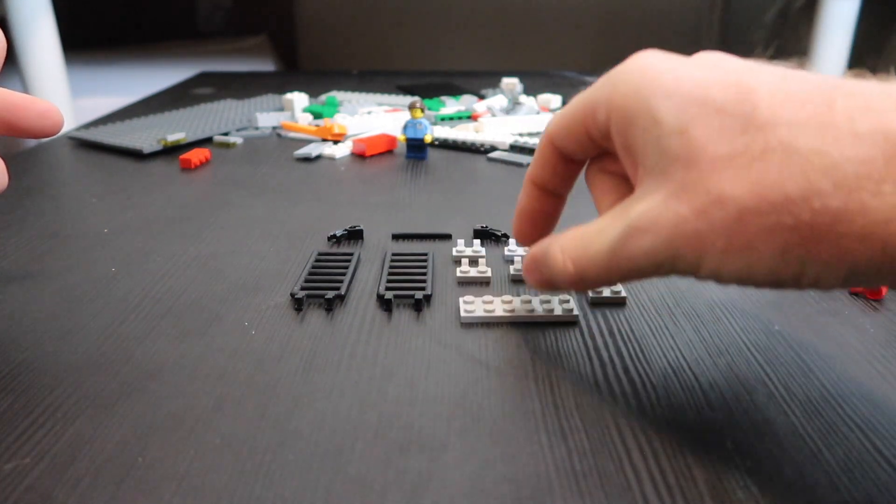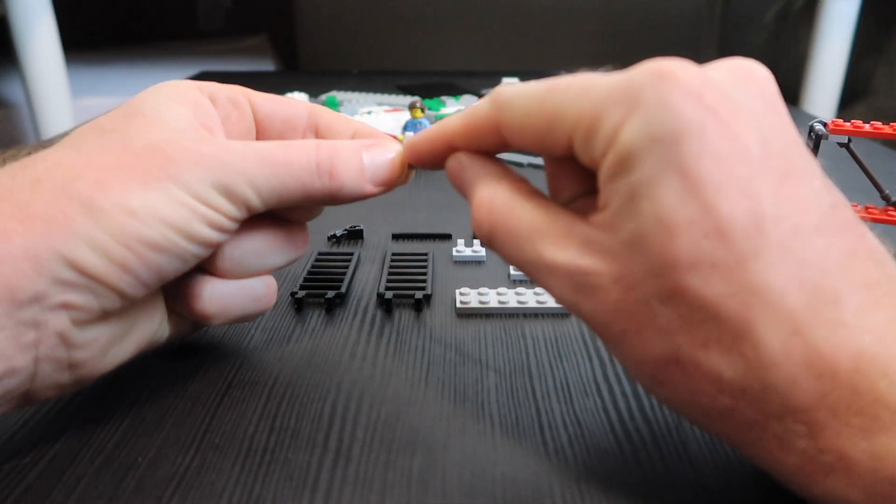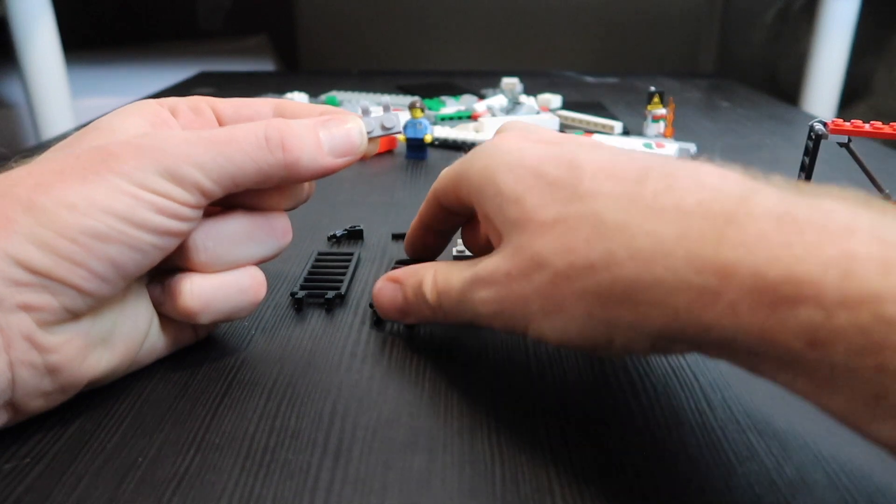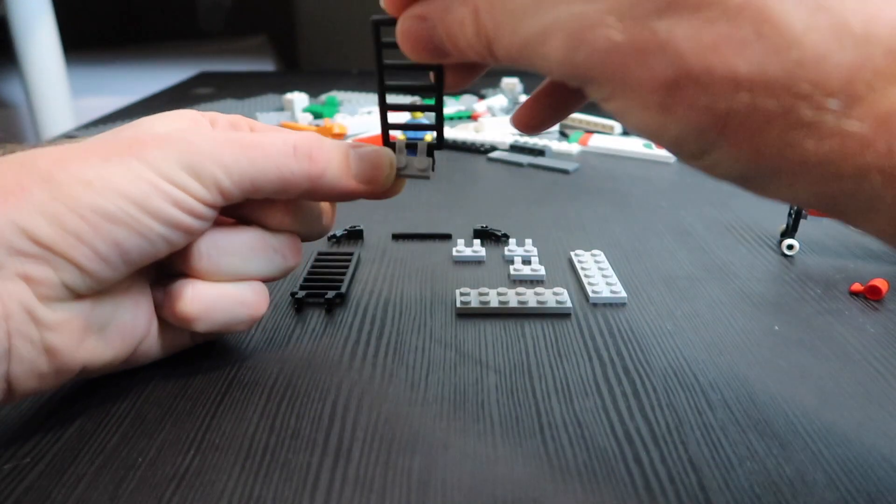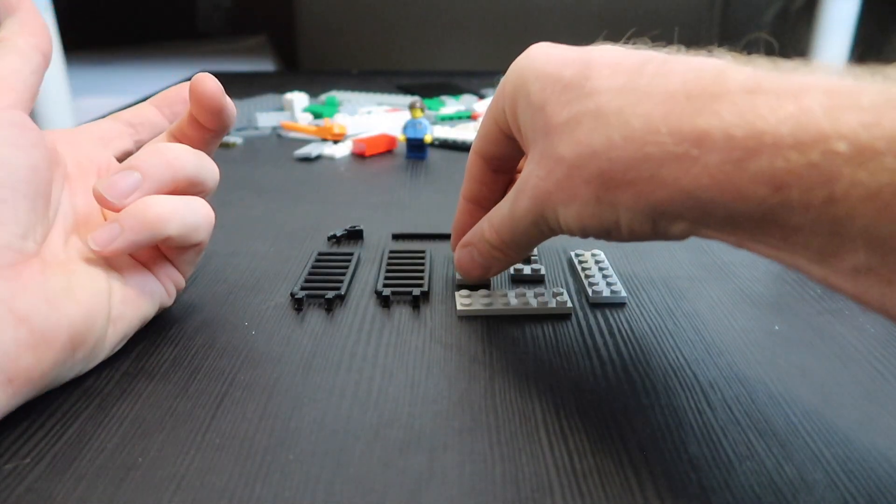Now obviously 2x6 plates there. These clips here. Now these are the ones with the 2 on. You might want to use the ones with a single clip in the middle. For the reason that the single clip ones will actually go on the lower rung there if you want to. And you'll see why you might want to do that in a minute.